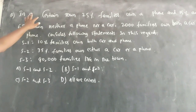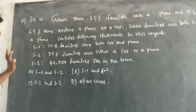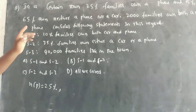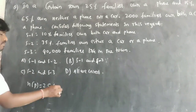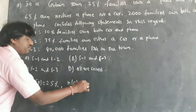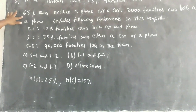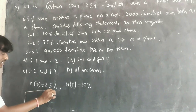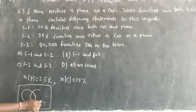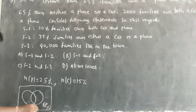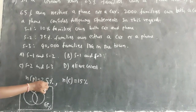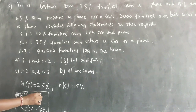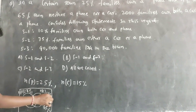How many families are in this certain town? 25% of families own a phone, so number of phone = 25%. Then 15% own a car, so number of car = 15%. And 65% own neither phone nor car — they are outside the sets.